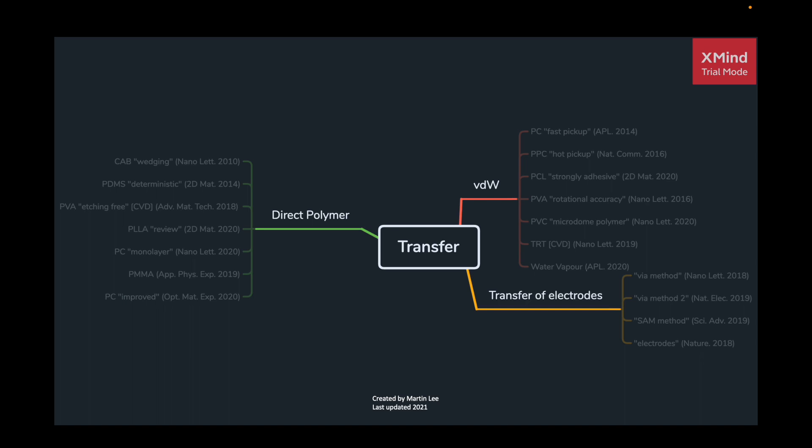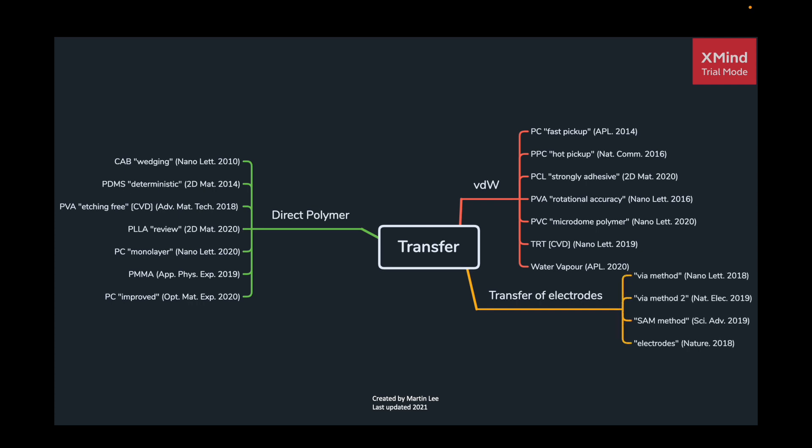As I've done in the first half of the episode on the exfoliation methods, I have taken the liberty to separate the transfer methods into three categories. First is the pickup and release of 2D flakes using another 2D flake. Second is the direct transfer of 2D flakes using polymers. And finally, we will finish off with the transfer of electrodes.